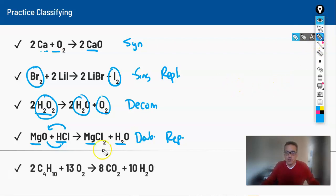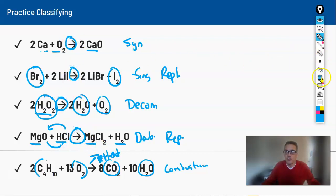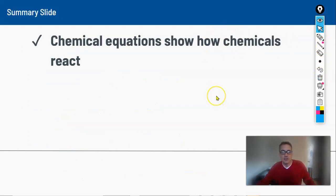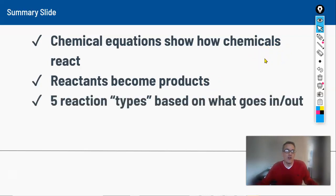The last example has two substances turning into two, but specifically a hydrocarbon with oxygen turning into carbon dioxide and water — that's a combustion reaction. There may also be energy generated or heat given off, sometimes shown on the arrow. In summary: chemical equations show how chemicals react, reactants turn into products, and the amount of reactants equals the amount of products. All reactions can be classified into five types: combustion, synthesis, decomposition, single replacement, and double replacement.